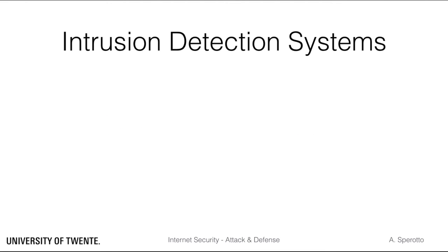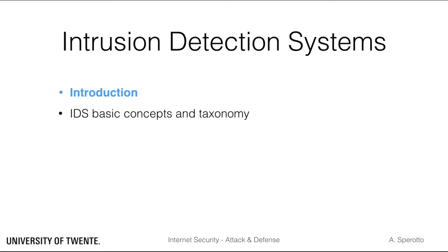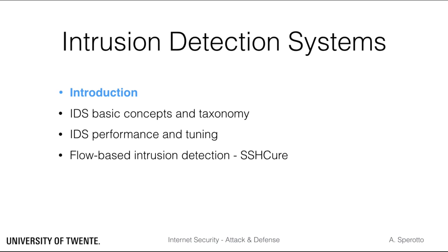This week we will explore the following topics. After this introduction, we will see and learn about the basic concepts and the most important types of IDSs. Then we will investigate how it is typically evaluated if an IDS performs well or not, and how IDSs can be tuned to work in a specific environment. We will then look into an existing IDS, a flow-based network intrusion detection system against SSH attacks. And finally we will summarize.